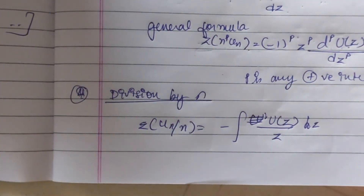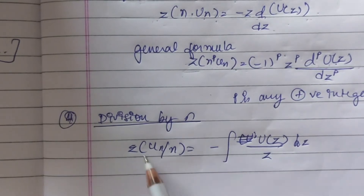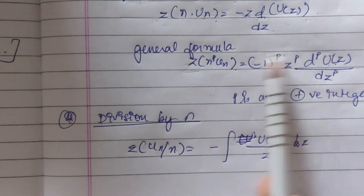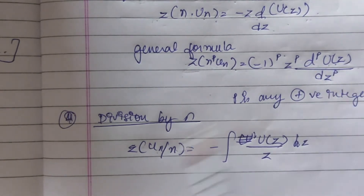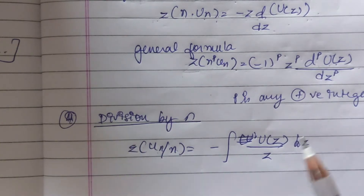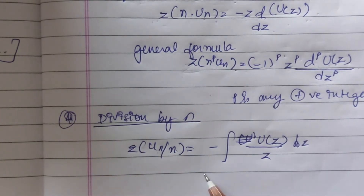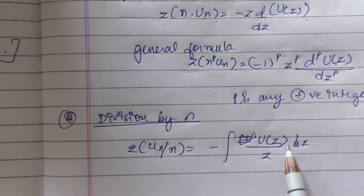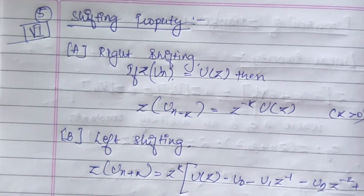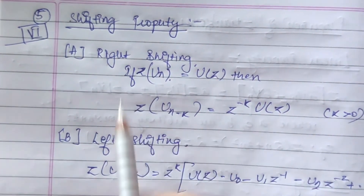Next is division by n. For division by n, Z{u(n)/n} involves integration — since multiplication uses differentiation, division uses integration. So Z{u(n)/n} = the integral of U(z)/z dz. Now this leads into the shifting property, which is an important part.